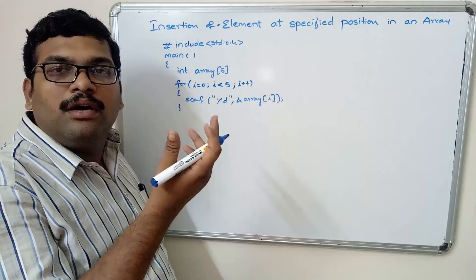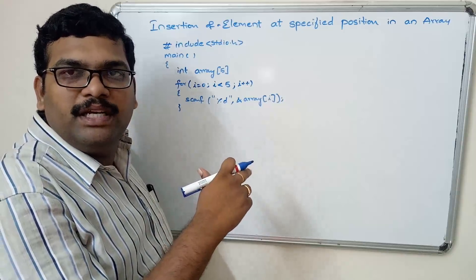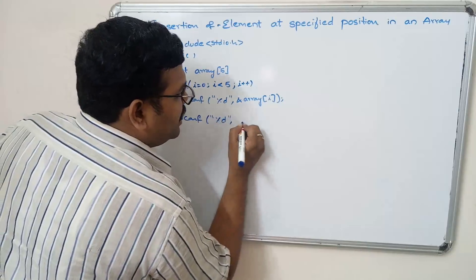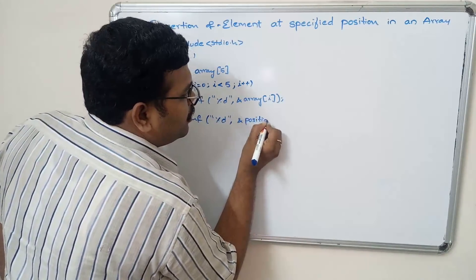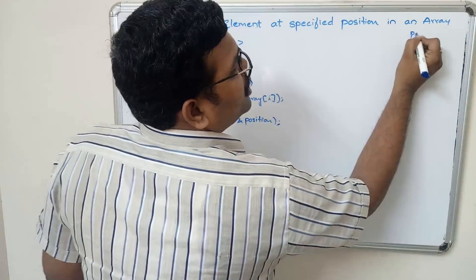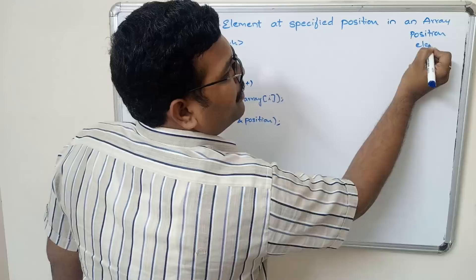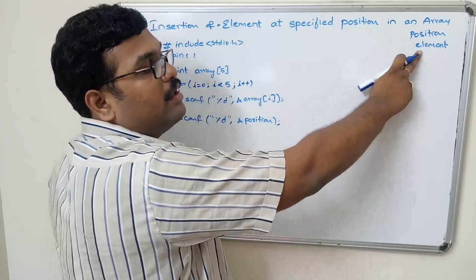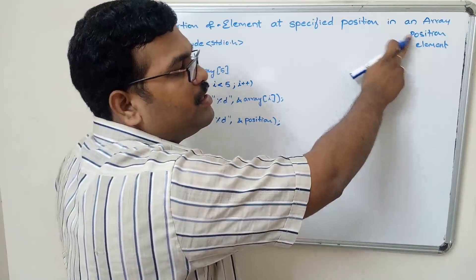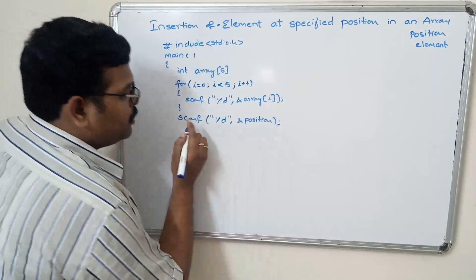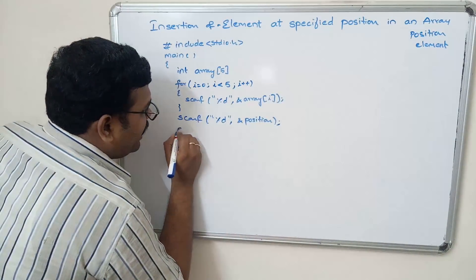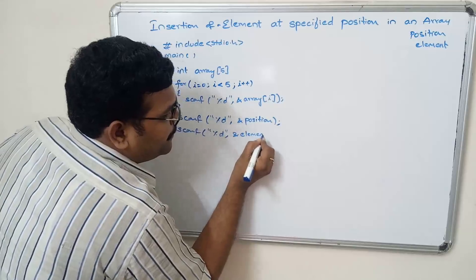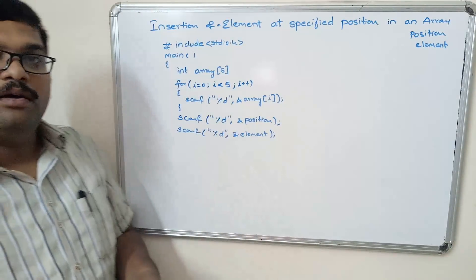Now we need to get the position where the value should be inserted. Write a scanf to read the position using %d and &position. We need two inputs: the position where the element should be inserted, and which element is to be inserted. So write another scanf and take the input for element. We have to insert this element at the given position.